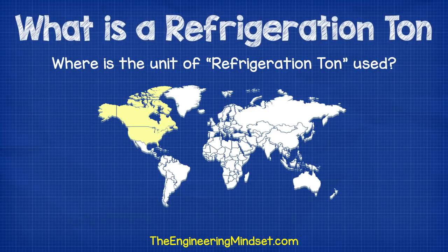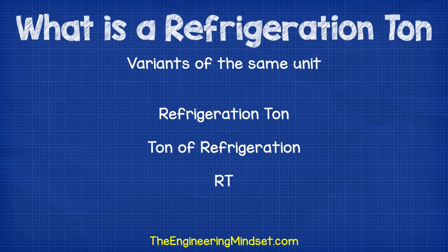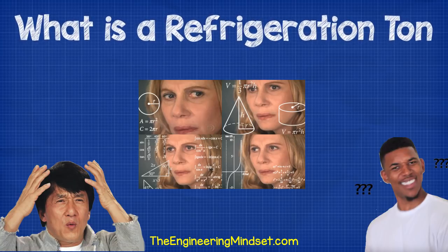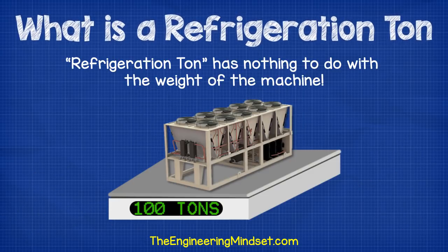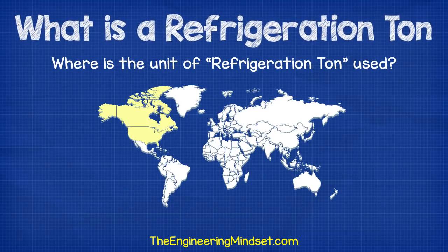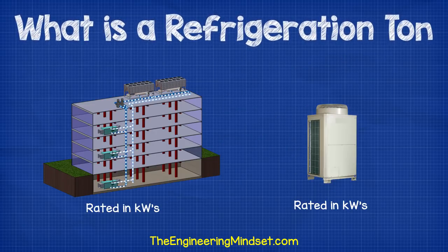The term Refrigeration Ton is commonly used in North America and it's a unit of measurement for the cooling capacity of a refrigeration machine. It has a few variants and it's sometimes called a Ton of Refrigeration or just RT for short. The term is a little bit confusing to many people — it has nothing to do with the weight of the machine, it only relates to the amount of cooling that the machine can produce. The term used to be used in many other countries but the majority of the world has switched over to SI metric units of kilowatts of cooling.